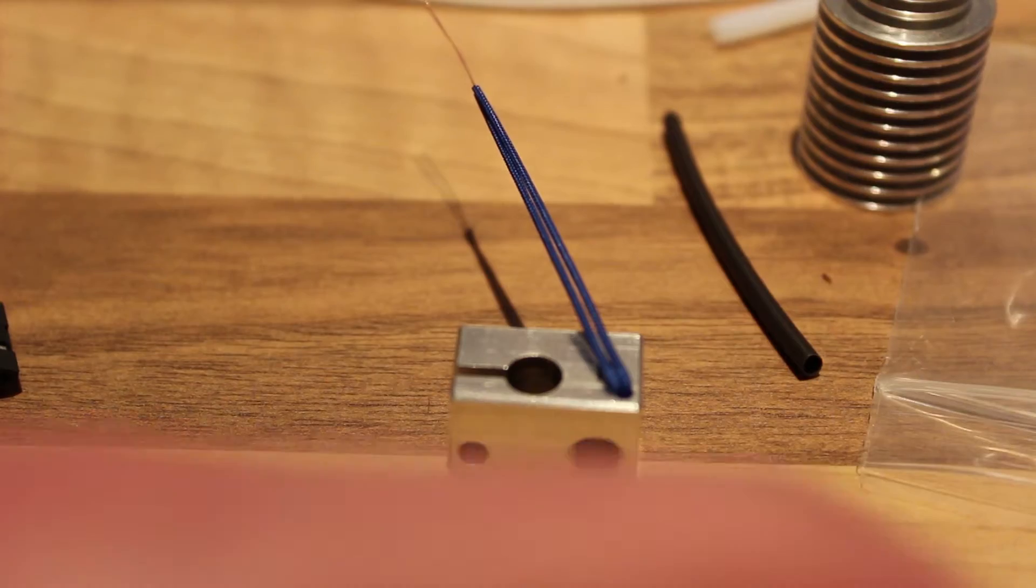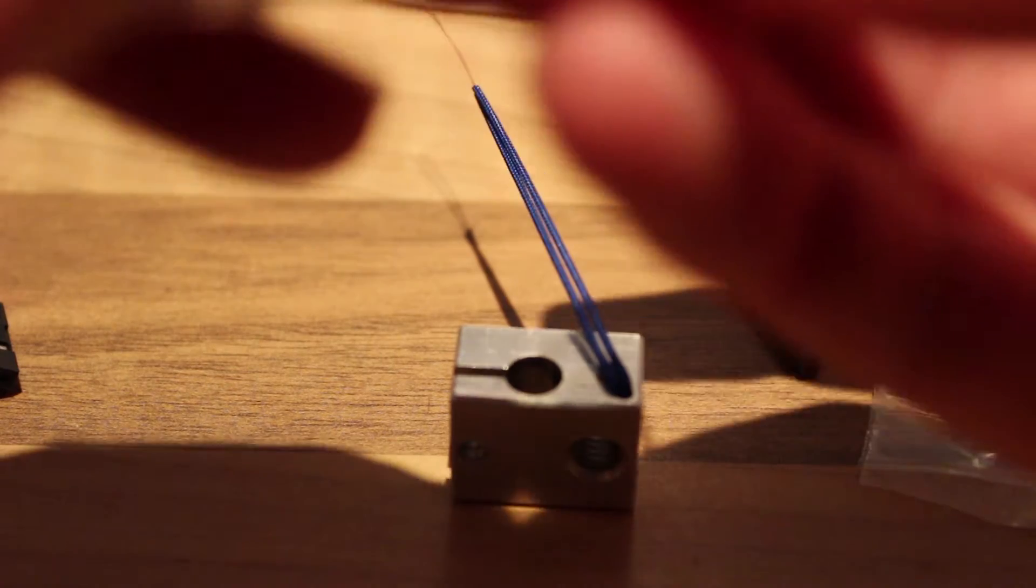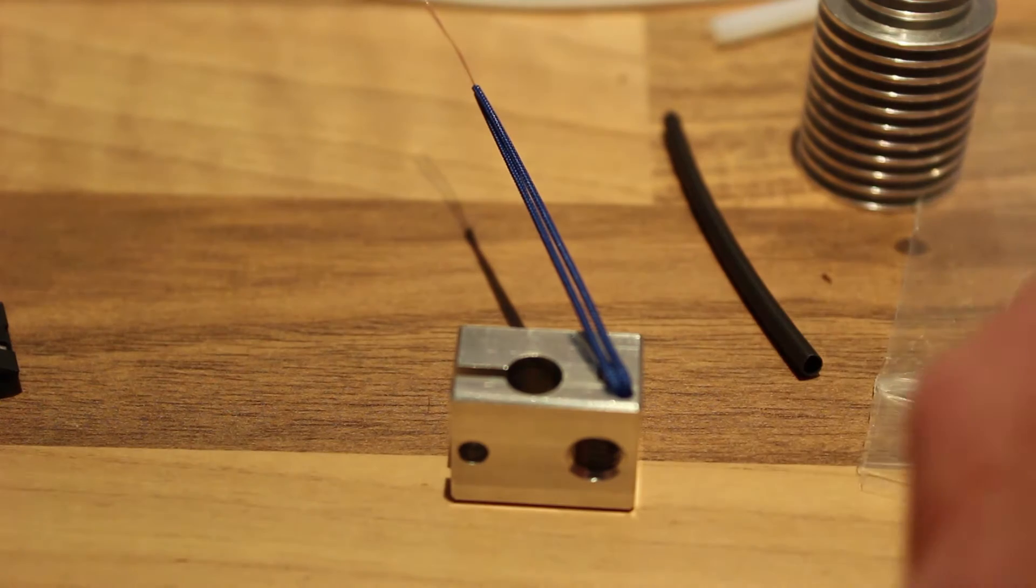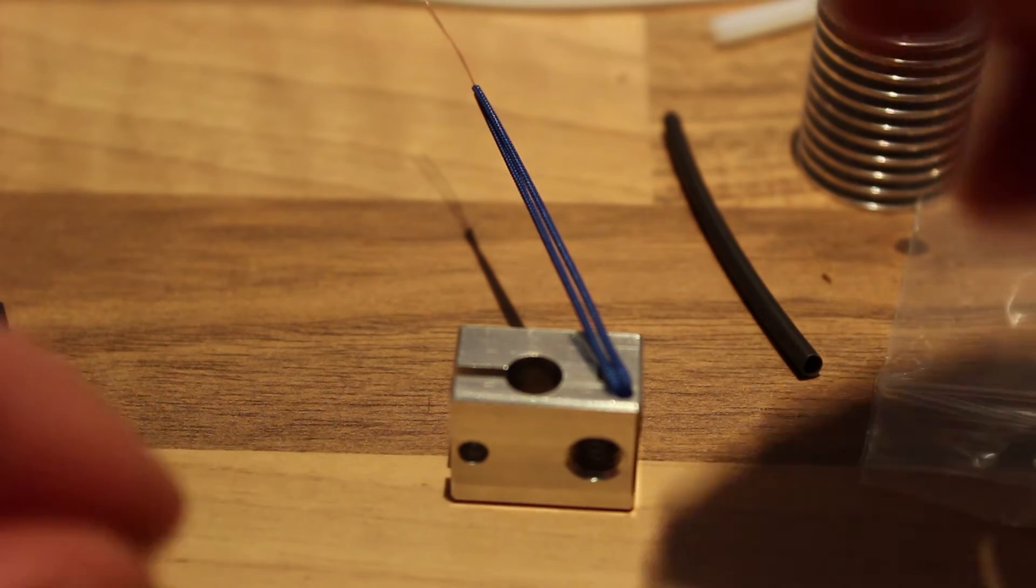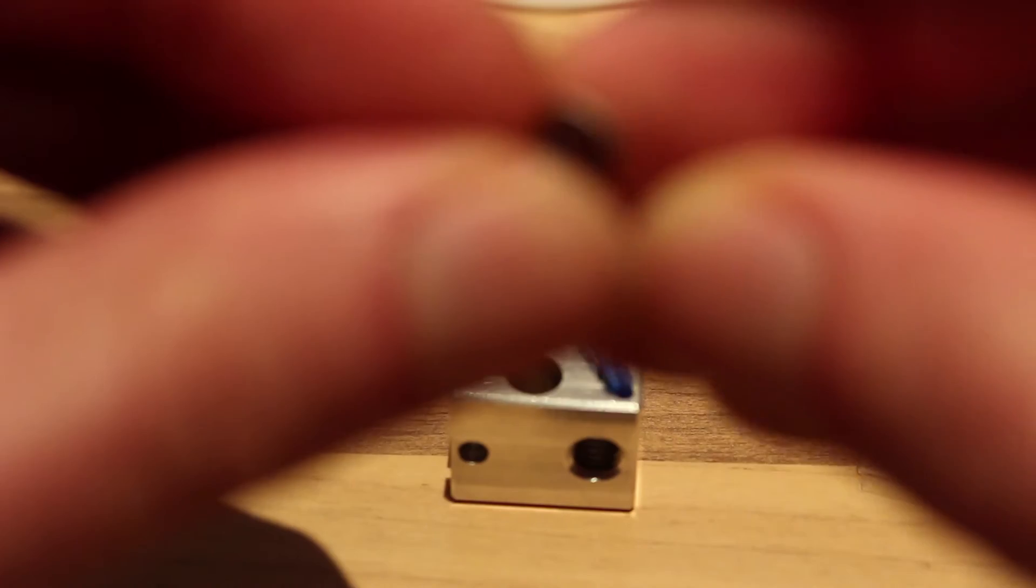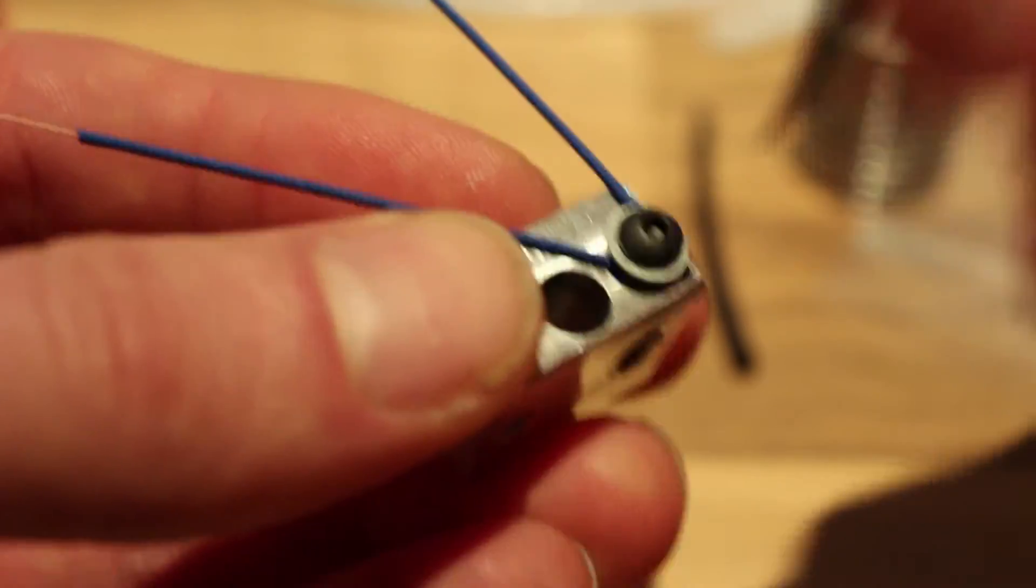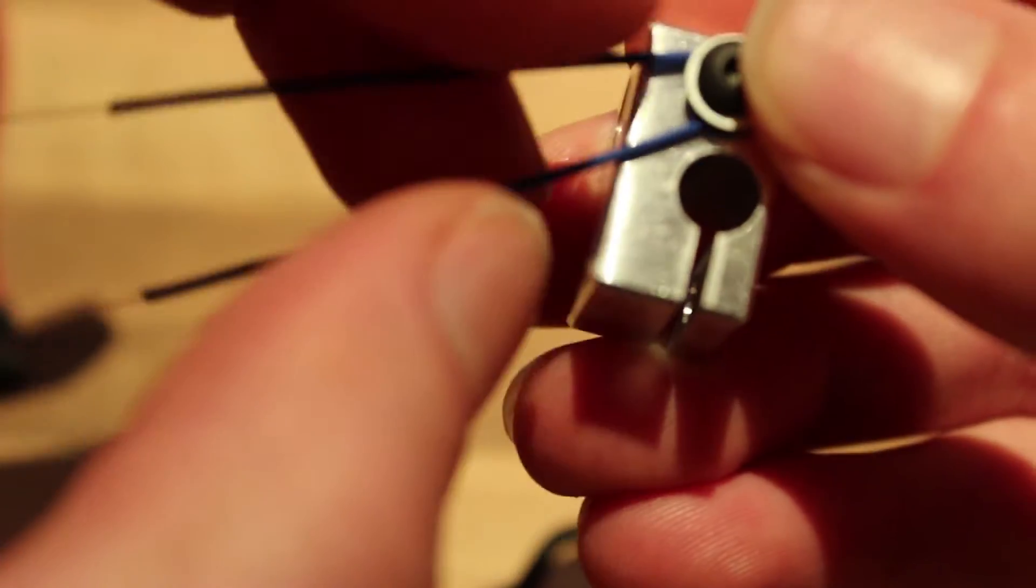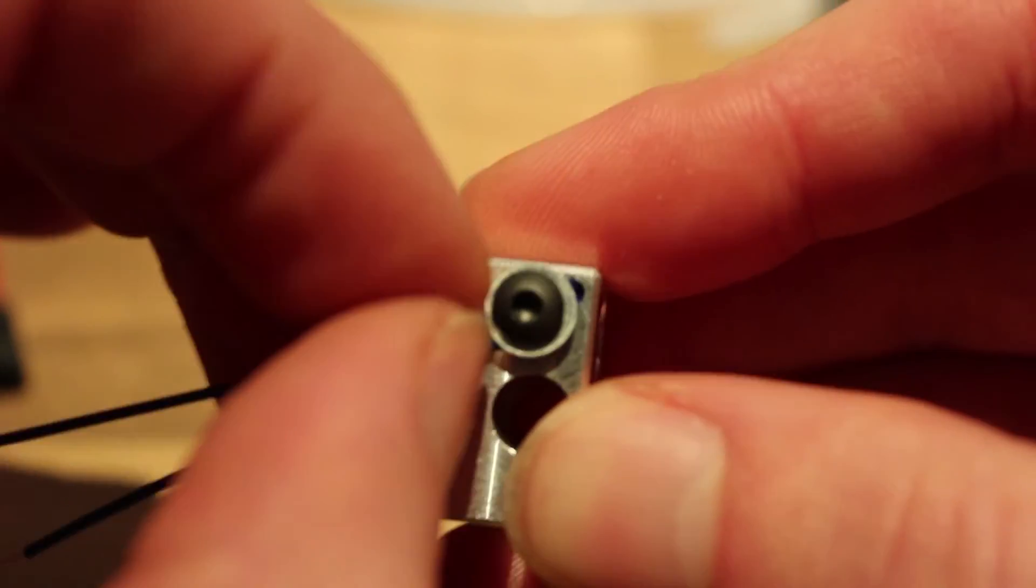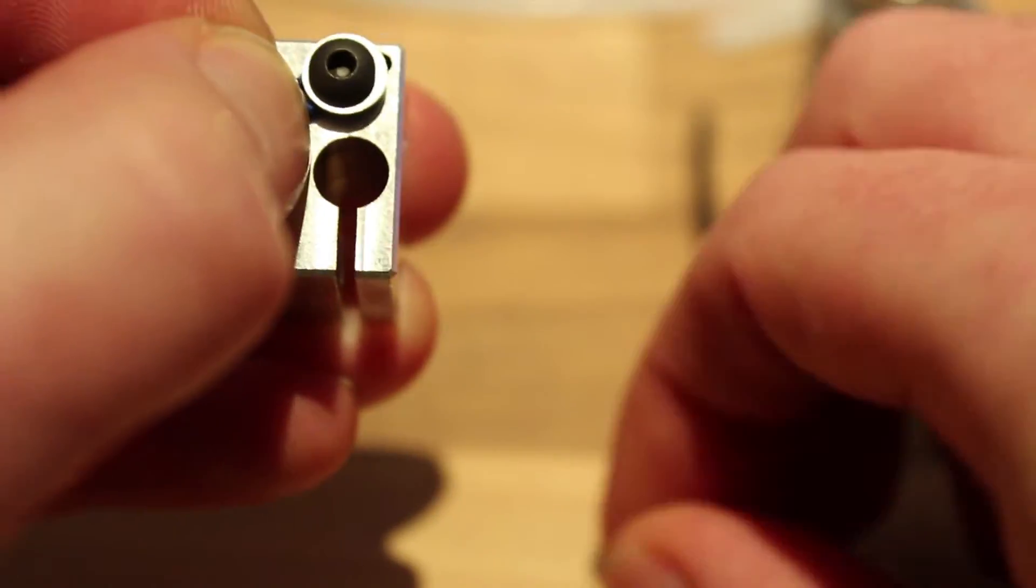Now your thermistor sits nice in the heater block. Next you want to take your washer and a little screw. Make sure the sharp edges are on the top side so you don't cut into the wires, and then slowly make sure you have the wires like this.